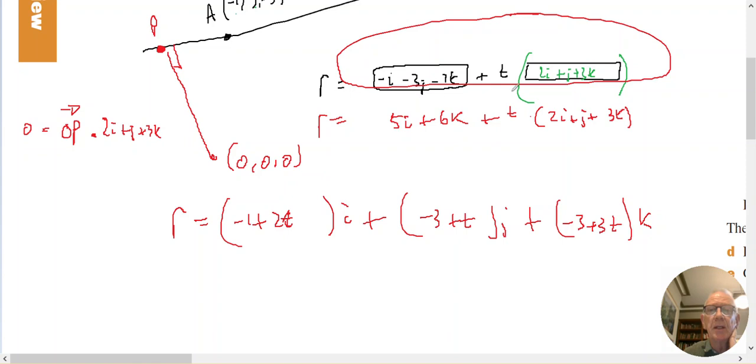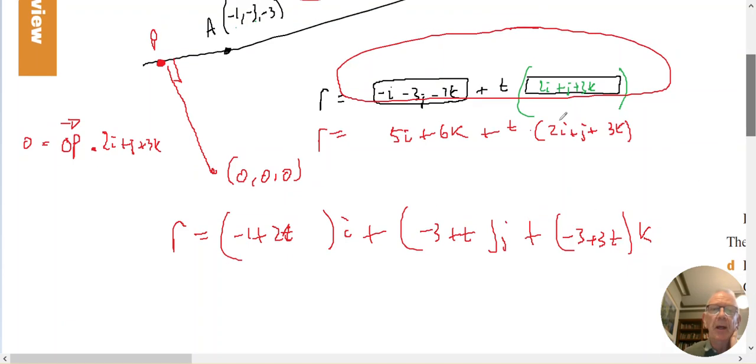That's just expanding this bracket with the T, collecting I's together, J's together, K's together. So that represents any point along the line. So this represents point P.